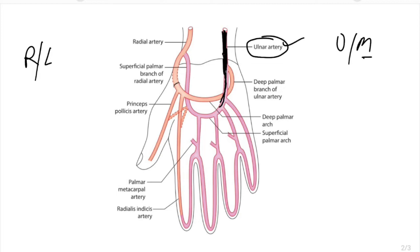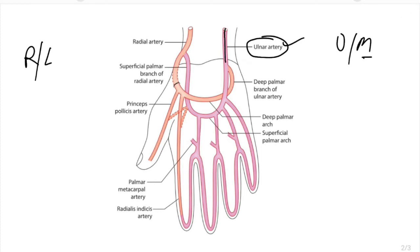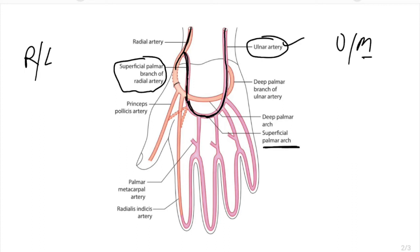The ulnar artery gives a superficial branch and a deep branch. The superficial palmar arch is a continuation of the ulnar artery, making an arch in the palm with its convexity toward the fingers. On the lateral side it is completed by the superficial palmar branch of the radial artery. The radial artery also has a deeper branch, and from it arises the superficial palmar branch which completes this arch.